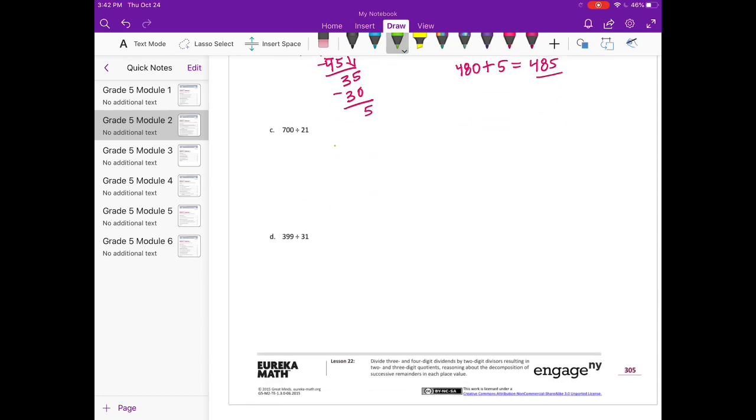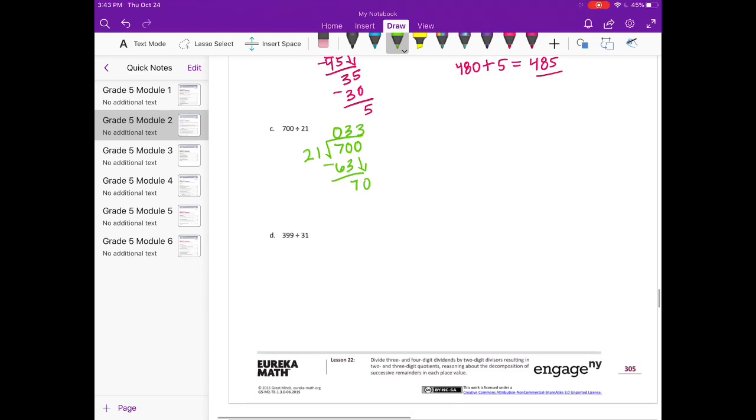700 divided by 21. How many times can 21 go into 7? That would be 0. But how many times can it go into 70? So 21 times 4 would be 84. So that's too big. So 21 times 3, that's 63. If we subtract we get 7 and bring down the 0. So we have 70 again. So we can go in 3 times. And we get 63. So we have 33 remainder 7.